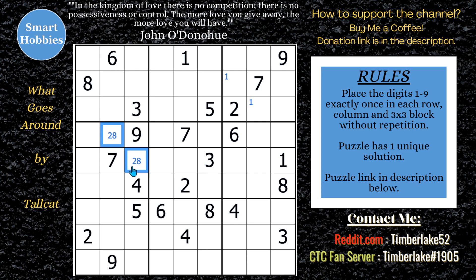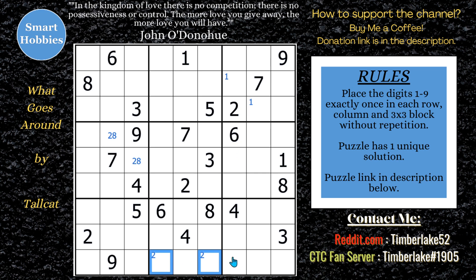Looking further at the twos, we have a pointing pair of twos down here. Since the two comes down column five and then across row eight, there's only two spots left for two here, which means the two can't be in any of these spots in block nine because it has to be in one of these spots in block eight. And so now you can see the twos are limited to these two spots here in block nine. Nice.